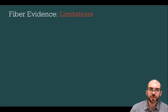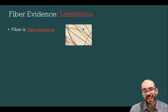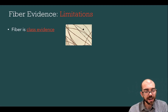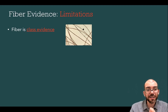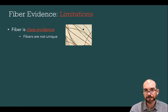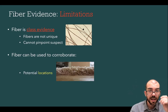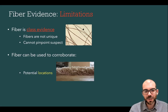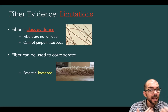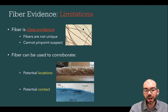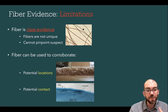There are limitations to using fiber evidence. The big one is that fiber is class evidence — you cannot use a fiber to directly connect an individual to its origin, but you can determine a class, such as people who own a particular jacket, hat, or car with specific upholstery. Fibers are not unique and can't be used to pinpoint a specific subject. Fibers can, however, be used to corroborate potential locations or contact. Think about Locard's exchange principle — when people come in contact with each other, they exchange everything, and fibers are included in that.